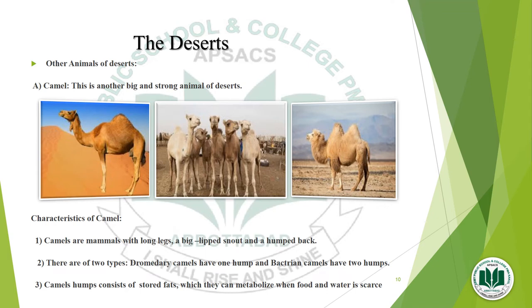Here you can see the picture of camels. As you all know, the camel is known as the ship of the desert. There are two types of camels: one with two humps and one with a single hump. Dromedary camels have one hump and Bactrian camels have two humps. Camel humps consist of stored fat, which they can metabolize when food and water is scarce. So camels can live without food and water for many days.